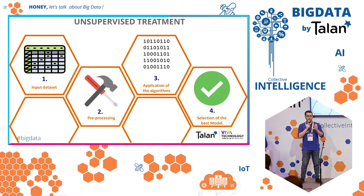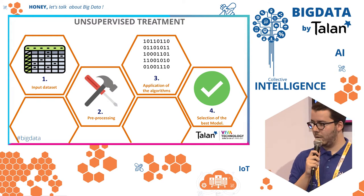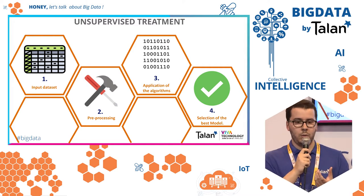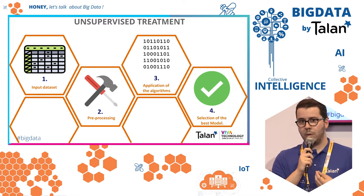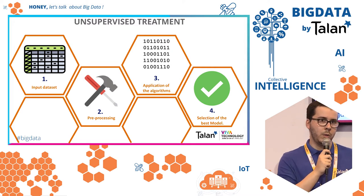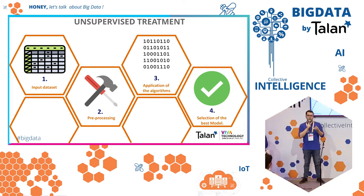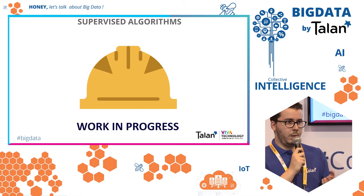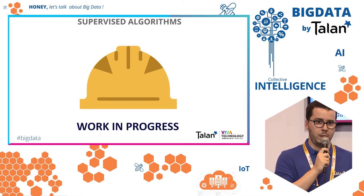For the unsupervised treatment workflow: first, you give the chatbot your data set. Second, our algorithm pre-processes your data to put it in the correct format for the models. Third, the models are applied to your data. The last step is checking which model performed best — the algorithm tries many models and presents the user with the top one or the three best. For supervised learning, it is currently a work in progress and we will share more information in September of this year.